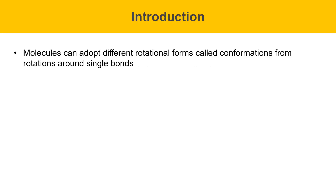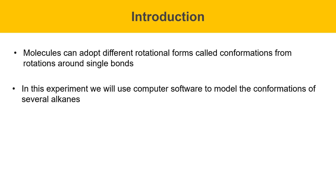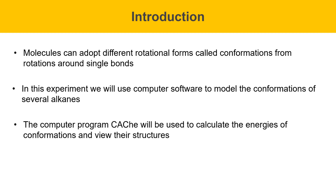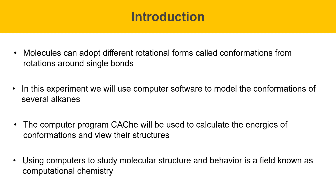In this experiment, we're going to learn about conformational analysis and computational chemistry. Molecules can adopt different rotational forms called conformations due to rotations about single bonds. We're going to use the computer program CASH, which is a commercial software package, to calculate the energies of the conformations of several molecules and view their structures. Using computers to study molecular structure and behavior is a field of chemistry known as computational chemistry.